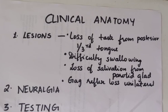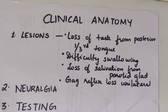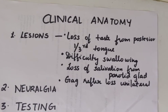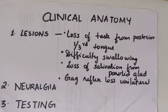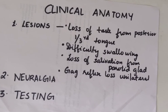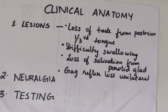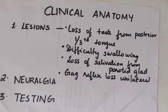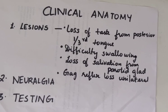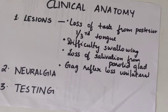Glossopharyngeal neuralgia is quite rare. When it occurs, it presents as a paroxysmal attack of intractable pain in the area of sensory distribution of the nerve, such as the tongue and the ear, and can be precipitated by swallowing. To test whether the glossopharyngeal nerve is functioning properly, there are two methods: eliciting the gag reflex, and testing taste sensation from the posterior one-third of the tongue. Thank you for watching the video. Please sound off in the comments if you have any doubts.